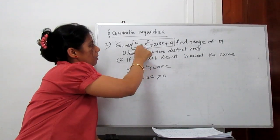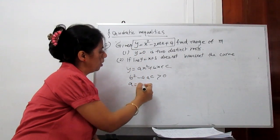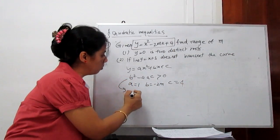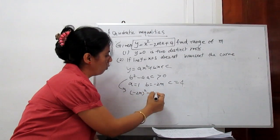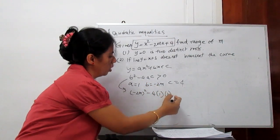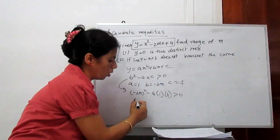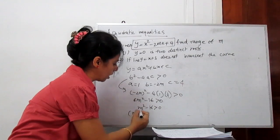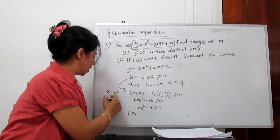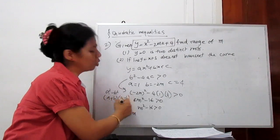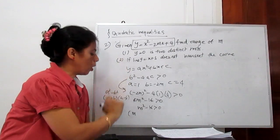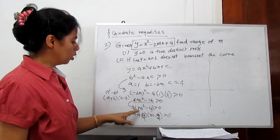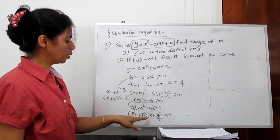Compare the given equation with the standard form. Our a is 1, b is minus 2m, and c is 4. Substituting into the discriminant: it becomes minus 2m squared minus 4 times 1 times 4 greater than 0, which gives 4m squared minus 16 greater than 0, and then m squared minus 4 greater than 0. Using the identity a squared minus b squared equals a plus b times a minus b, it becomes m plus 2 times m minus 2 equals 0.